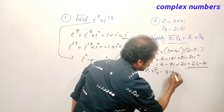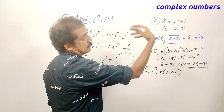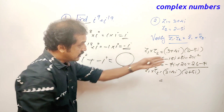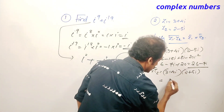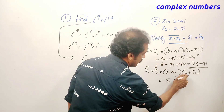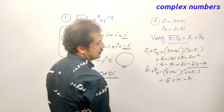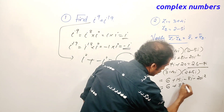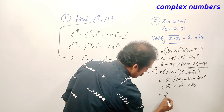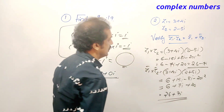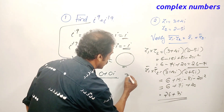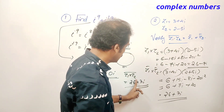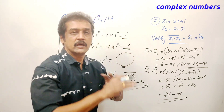Now for Z1 bar into Z2 bar: Z1 conjugate is 3 minus 4i and Z2 conjugate is 2 plus 5i. That equals 3 into 2 = 6, plus 3 into 5i = 15i, minus 4i into 2 = minus 8i, minus 4i into 5i = minus 20i squared. That gives 6 plus 20 = 26, and 15i minus 8i = plus 7i. So the right side equals 26 plus 7i.